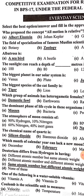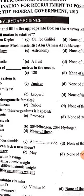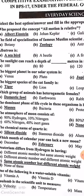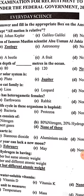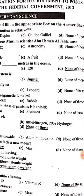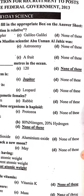The field of specialization of famous Muslim scientist Abu Usman Al-Jahiz was zoology. Albatross is a seabird. The sunlight can reach a depth of up to 1000 meters in water, so none of these is the answer.